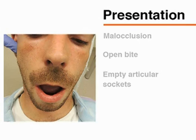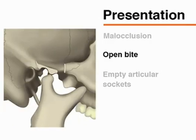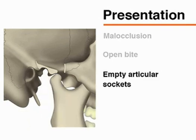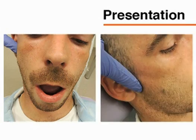Patients with bilateral TMJ dislocation have malocclusion, an open bite, and empty articular sockets. The empty sockets can be palpated as preauricular hollowing. In cases of unilateral dislocation, the chin is shifted to the contralateral side.